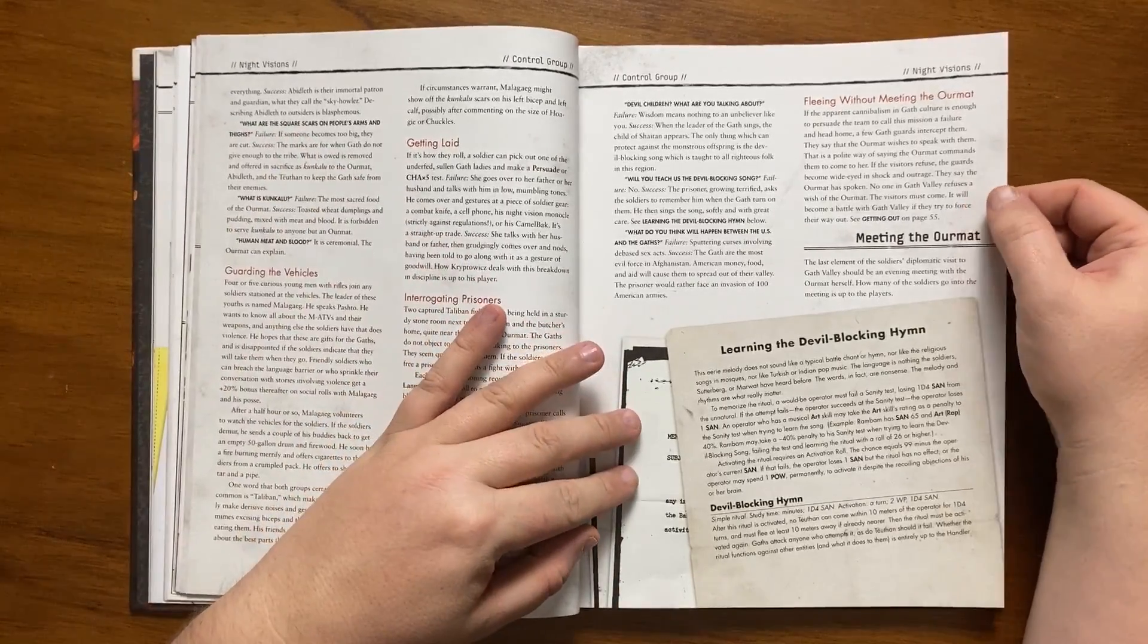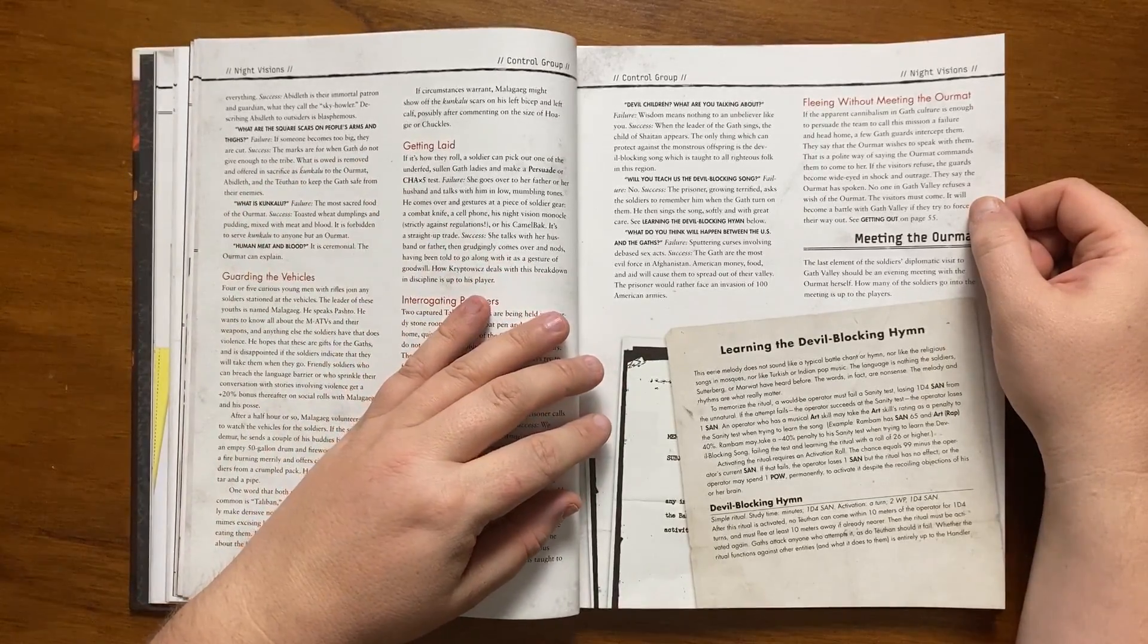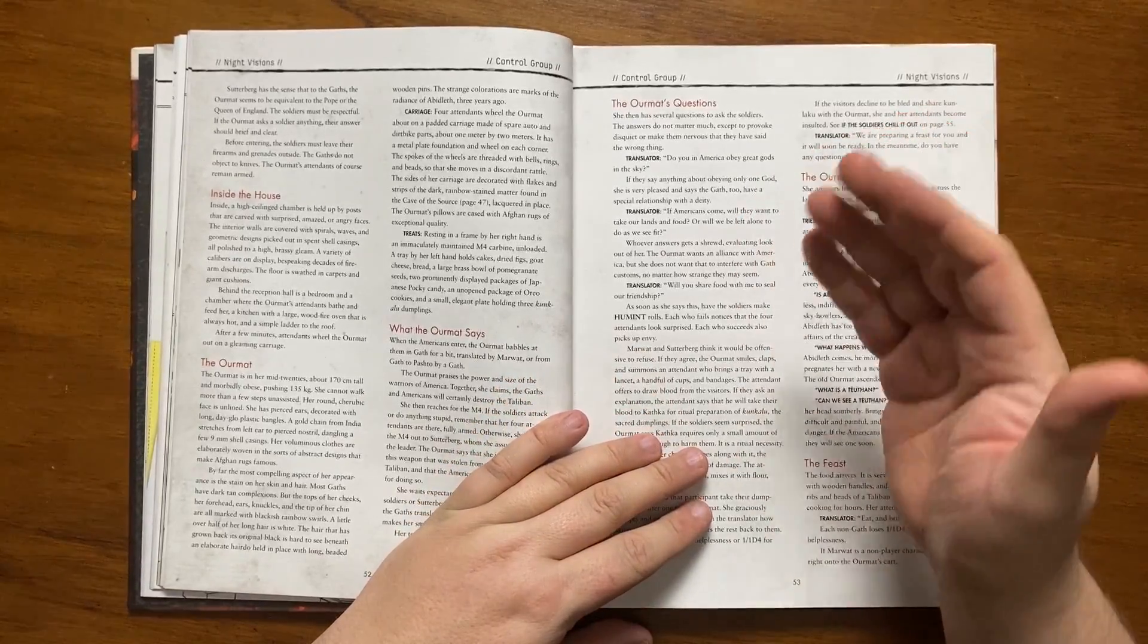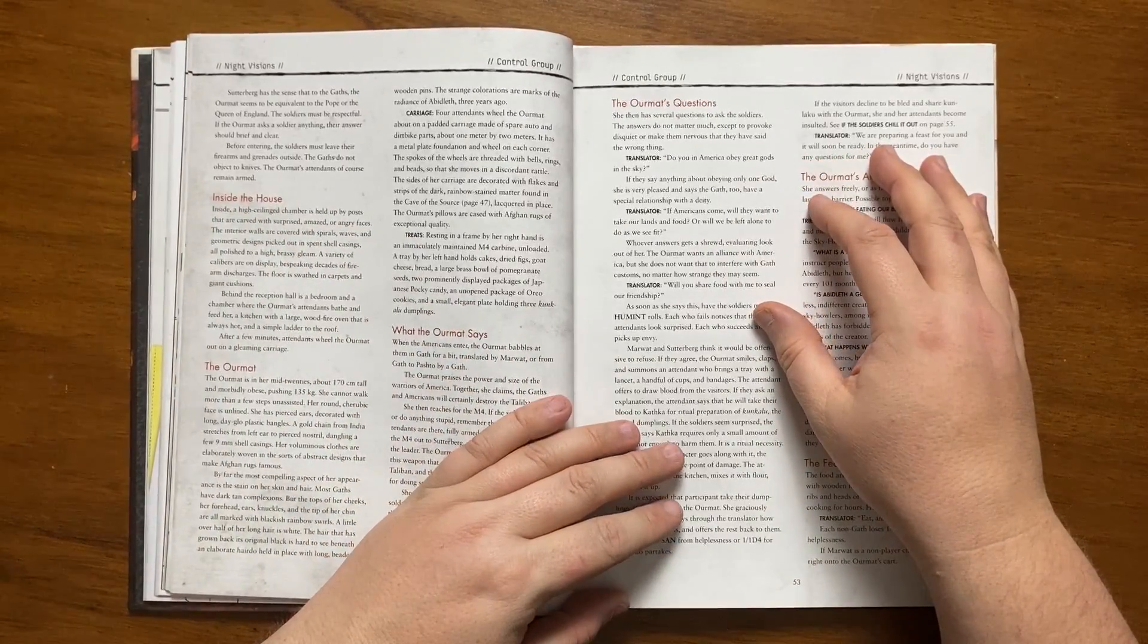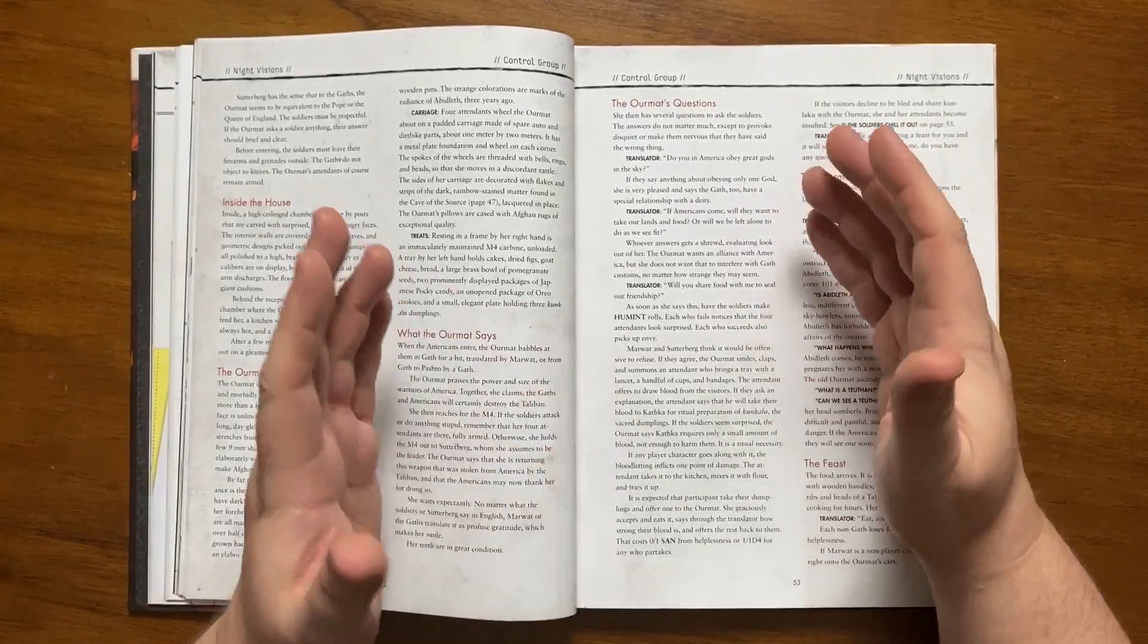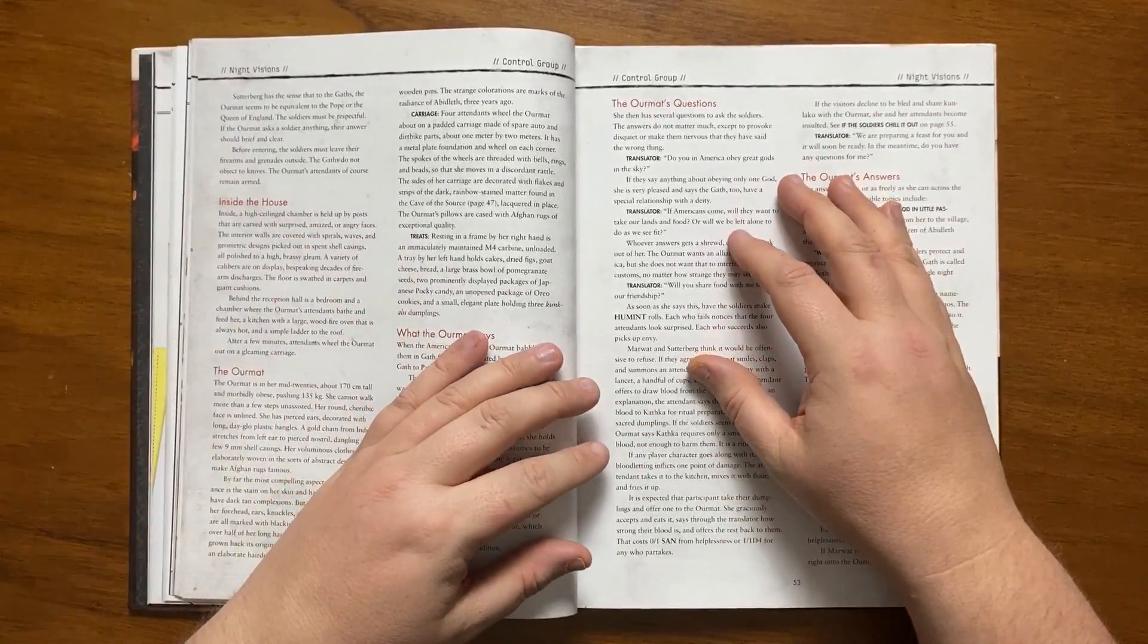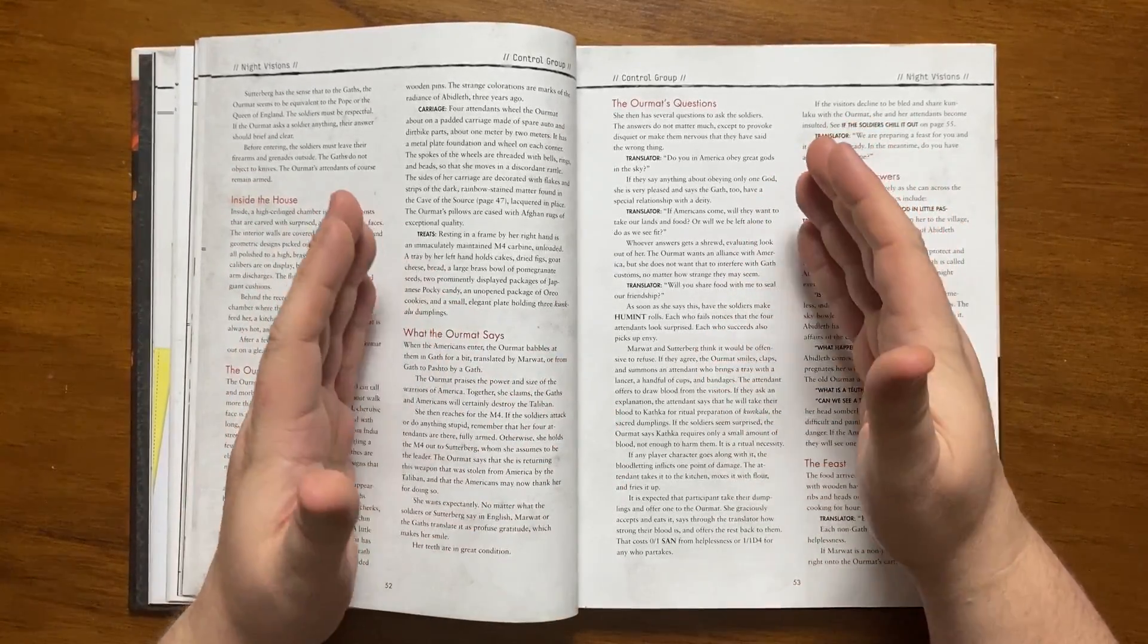Should the soldiers flee without meeting the ormat they are intercepted by the gath who insist that the ormat wishes to speak to them and it will come to blows should they further resist. The next section covers the most important part of the scenario, meeting the ormat. This will take place in the evening and Sutterberg has the feeling that the gath consider the ormat to be akin to their pope. She will insist that the soldiers are respectful. Before entering the seat of the ormat they will be required to leave their weapons outside though knives are permitted. Once they enter the chamber they will encounter a scene of uncomfortable luxury. The walls are carved with faces of expressions of surprise, amazement and anger and are covered in geometric shapes made from spent shell casings. The floor is covered in carpets with giant cushions. After a few minutes the ormat is wheeled in on a gleaming carriage.